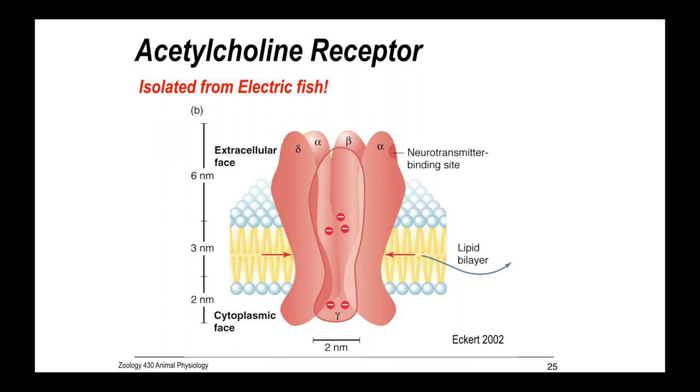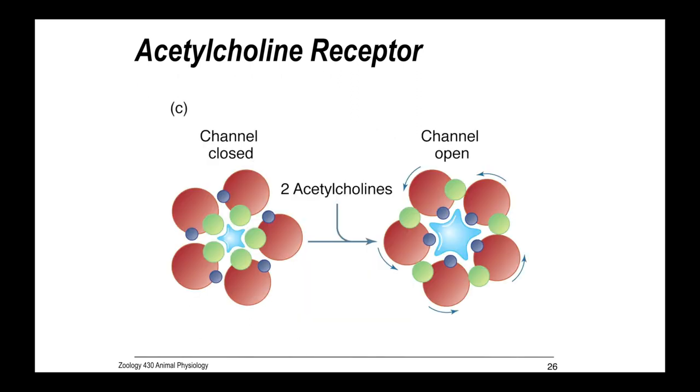This is the acetylcholine receptor from the neuromuscular junction. It's a transmembrane channel protein with neurotransmitter binding sites. There's two binding sites for acetylcholine, and when they bind, they open. It has this physical rotation of the membrane proteins opening this gap.